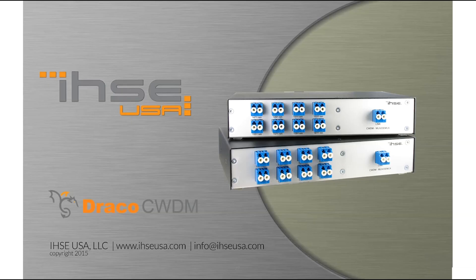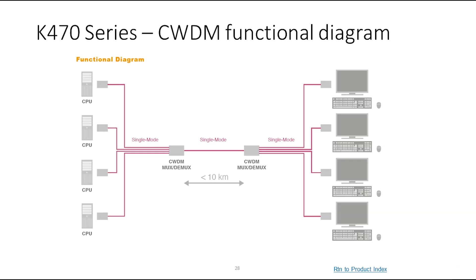Another cost-effective product we offer is the CWDM, in a 4, 8, or 16 duplex fiber connection, used for consolidating 4, 8, or 16 duplex fibers down to one and then breaking it out on the other end. This is commonly used at universities going across a campus or a large plant, as opposed to pulling additional cable, or connecting tie lines between mobile production trucks, or for staging and rental companies use this for events.